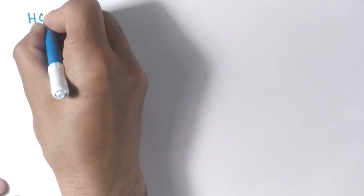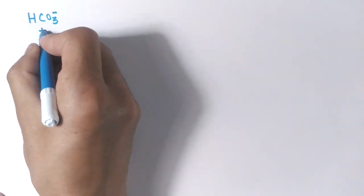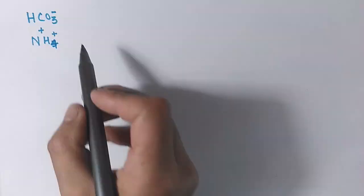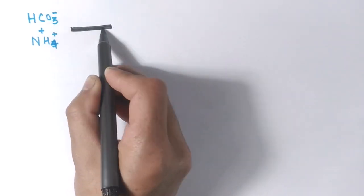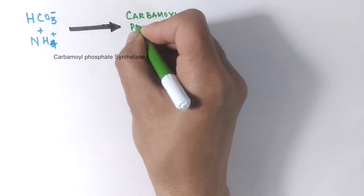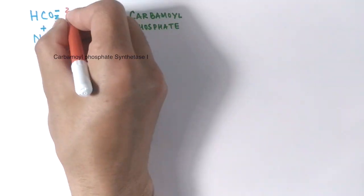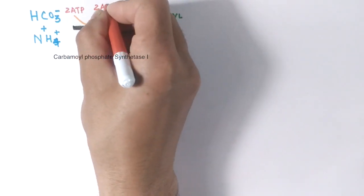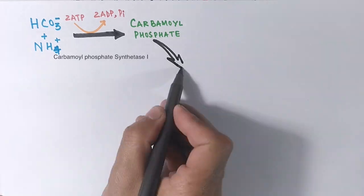The first two reactions of the urea cycle occur in the mitochondria, and the rest occur in the cytosol of the hepatocyte. In the first step, an ammonium ion reacts with a bicarbonate ion, catalyzed by the enzyme carbamoyl phosphate synthetase, producing carbamoyl phosphate. Energy from two ATP molecules is required, making this an irreversible reaction.